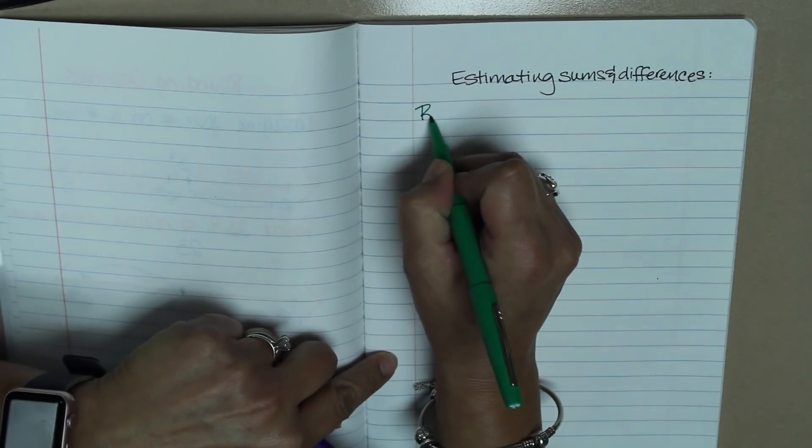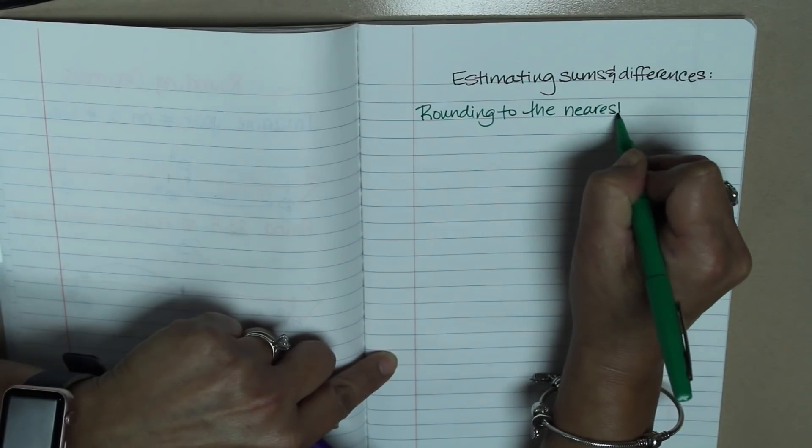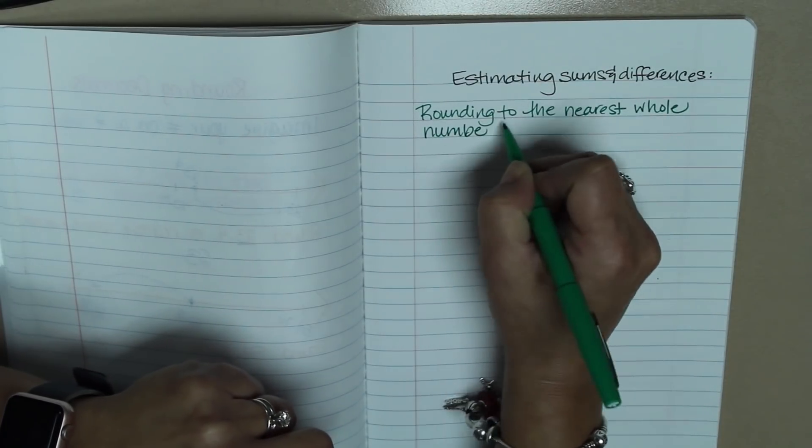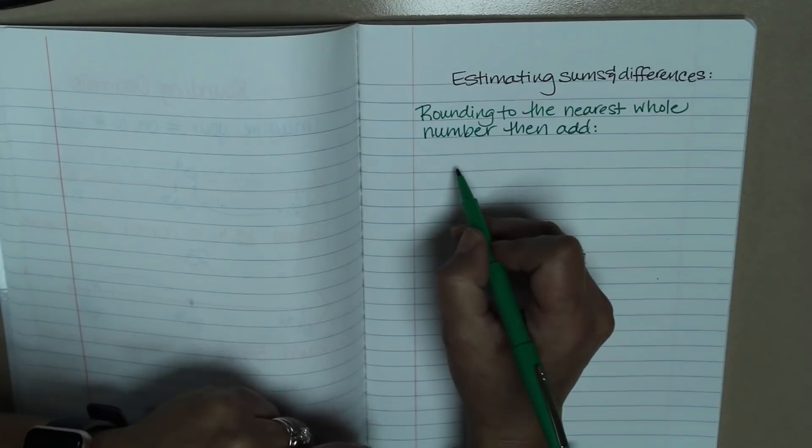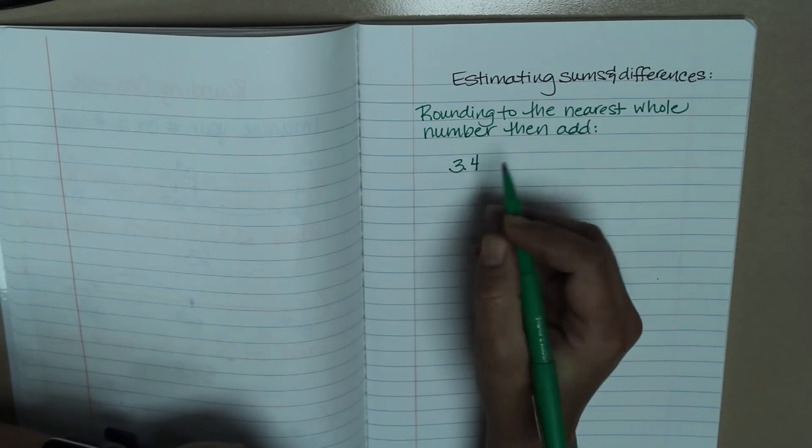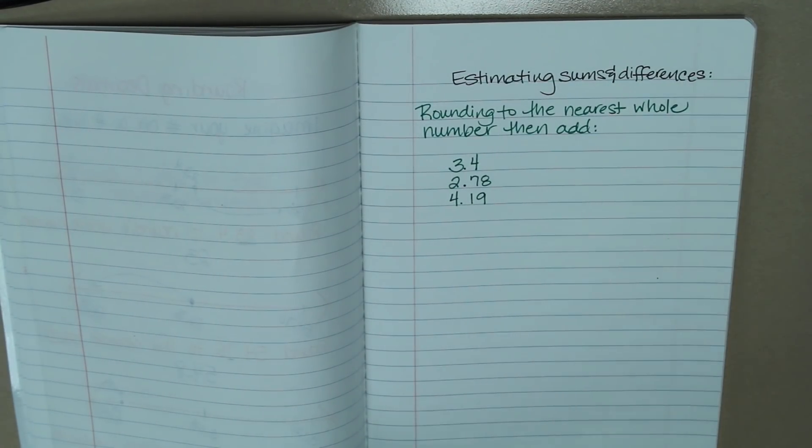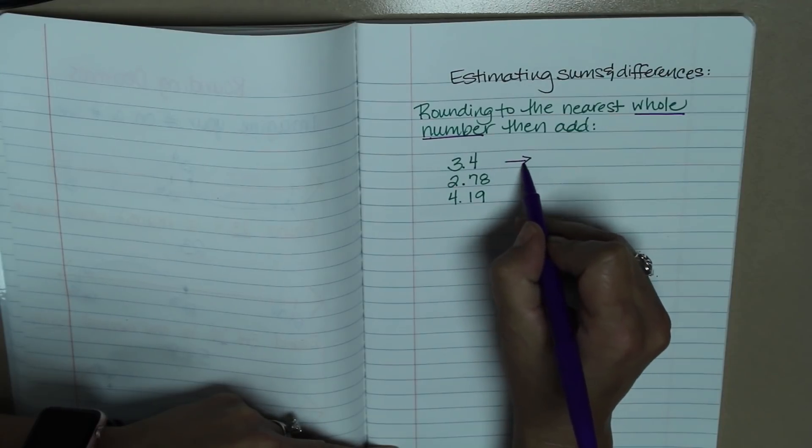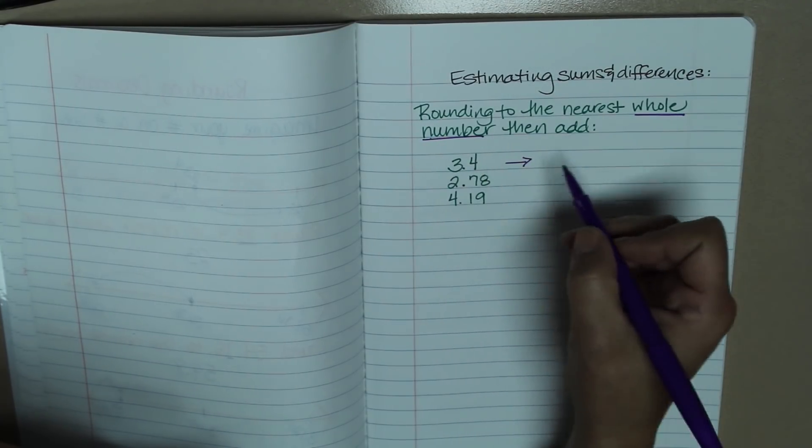So the first example is going to be rounding. This would be an addition problem. Let's say I was given the numbers 3 and 4 tenths, 2 and 78 hundredths, and 4 and 19 hundredths. So the first thing I want to do is round these to the nearest whole number. To round 3 and 4 tenths, we learned that if it is 4 or below, that the number stays the same. So if I rounded this, it would be 3.